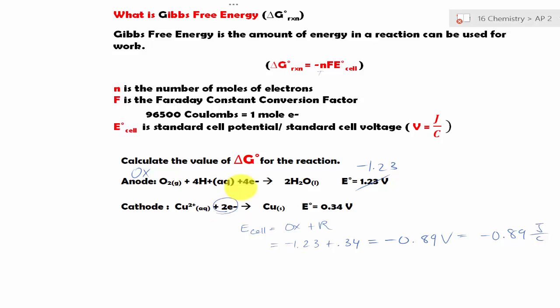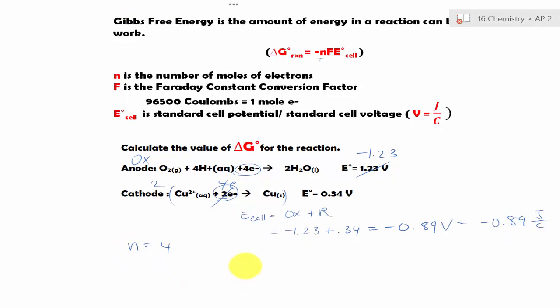If we look back at the half cell, in this case we have 2 electrons here for the cathode. But for the anode we have 4 electrons. So we can multiply this by 2. This will become 4 electrons. So the electrons cancel out. That means n is equal to 4. So let's plug in everything.